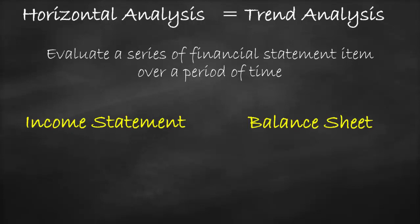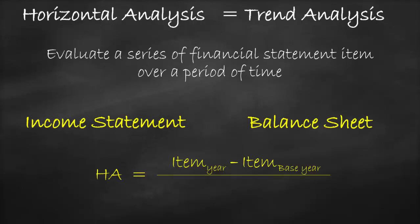The horizontal analysis formula is the value of a certain item at a certain year, minus the value of the same item at a base year, which is a fixed year. This is all divided by the value of the same item at the base year. Please note that a base year must be normal in the sense that there should be no recession or any price bubble.